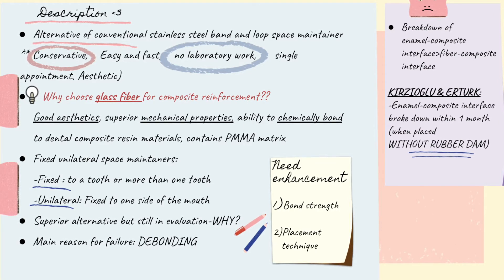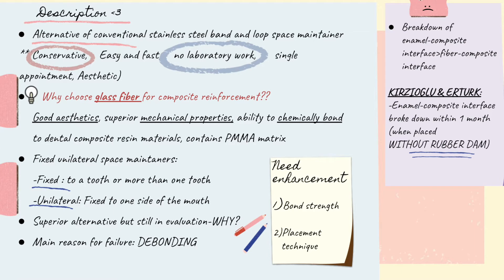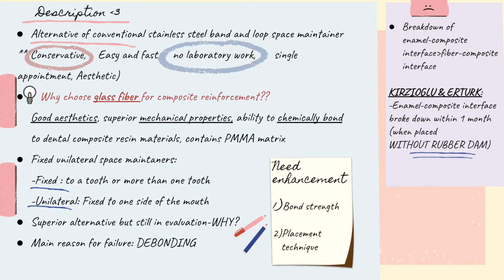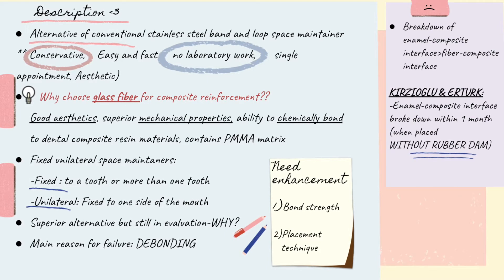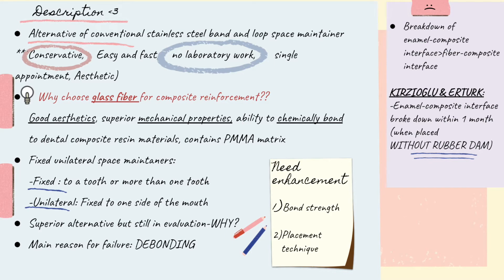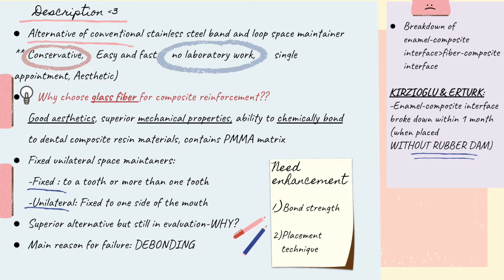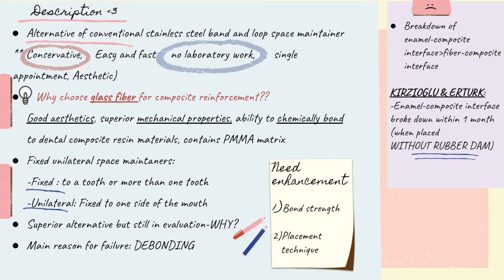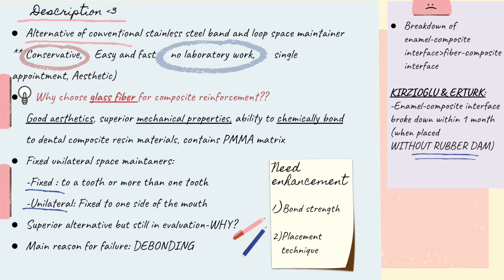The main reason it is still in evaluation is its primary failure mode: debonding. It needs enhancement regarding bond strength and the fixed placement technique. The breakdown of the enamel-composite interface is at higher risk compared to the fiber-composite interface. Authors from a space maintainer journal also state that the enamel-composite interface broke down within one month when placed without rubber dam.